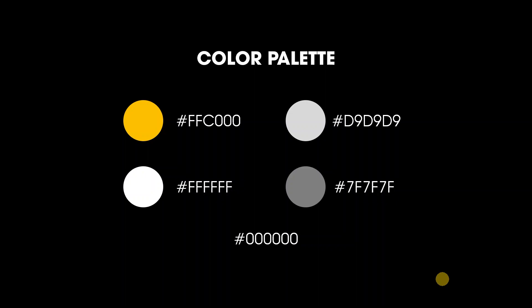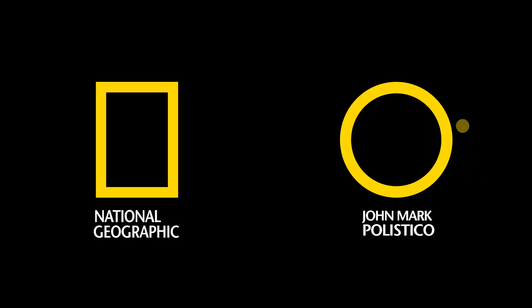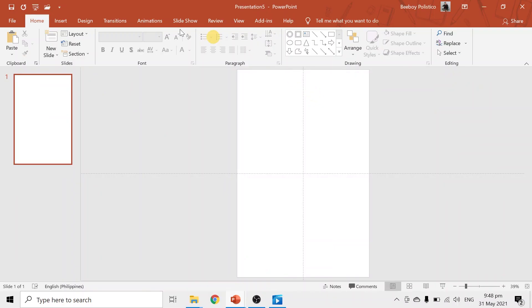Here are the color codes for the palette: we have a golden yellow, white, different shades of grey, and black. For typefaces, use a book-weight font for passages — the thinner ones. My suggested typefaces are Gotham, Helvetica, Airbnb Cereal, and Book weight for body text; and bold for titles — Gotham Black or Montserrat Black. Always use HD photos. Since we're talking about National Geographic, here's their logo and my NatGeo-inspired logo, which turns out to be a circle.